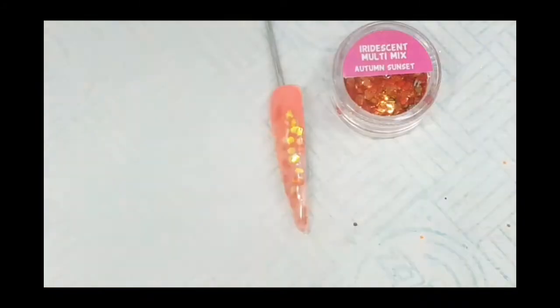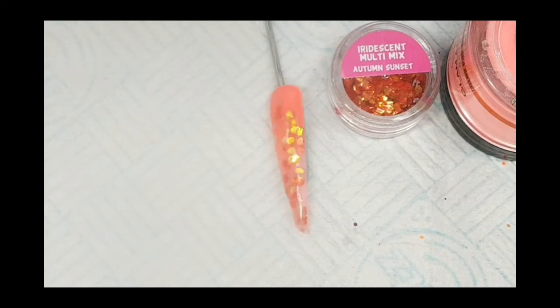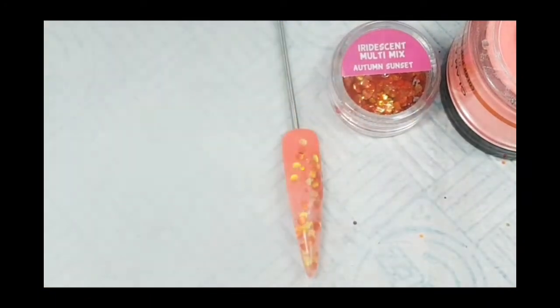That's the Autumn Sunset, it's a beautiful collection. And that's the Glam and Glitz Auto Expose, which is a really nice coral color, but you can make it a bit autumny with adding some deeper colored glitters. I'm just waiting for this display tip to set and harden.